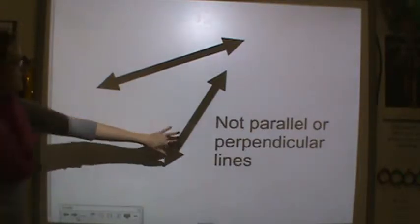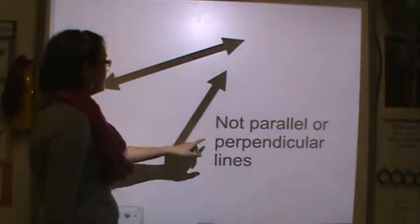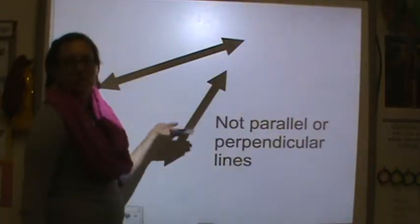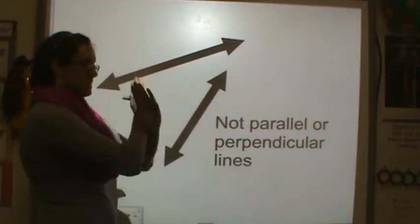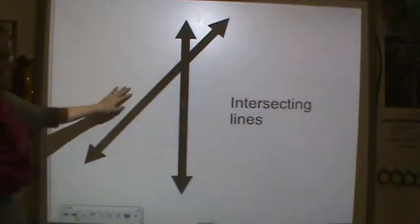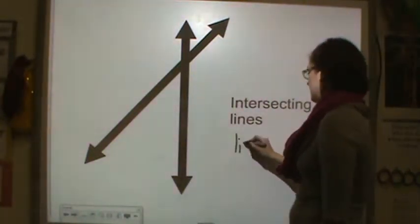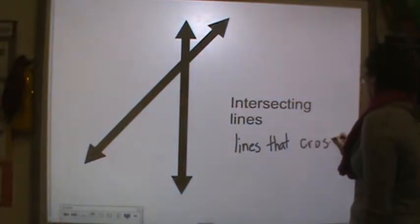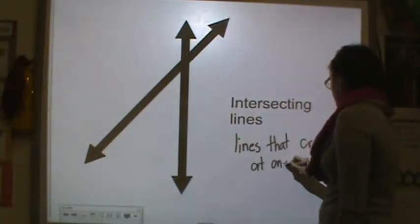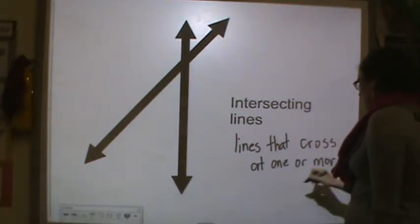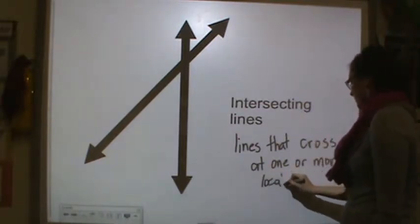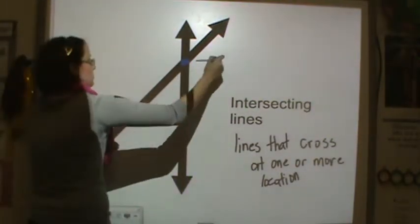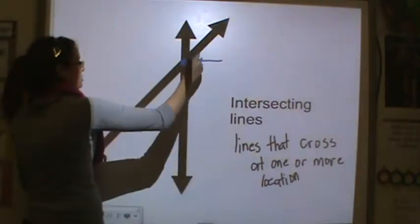These are non-parallel, non-perpendicular lines. These lines, if they continue on forever, will one day intersect — they will one day cross each other. So these are intersecting lines. Intersecting lines are lines that cross at one or more locations. They meet right here at that location — they intersect.